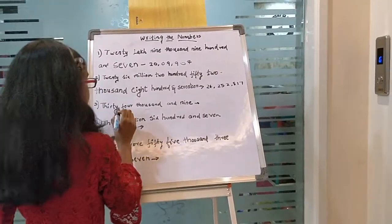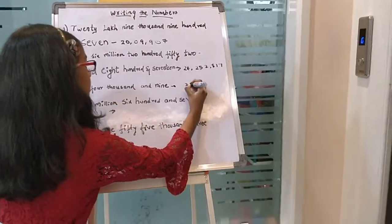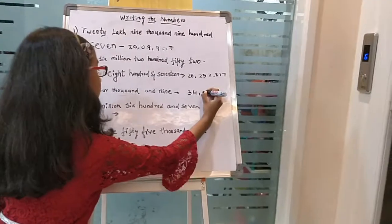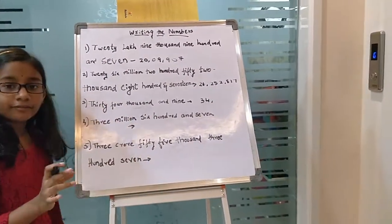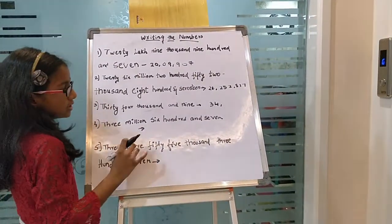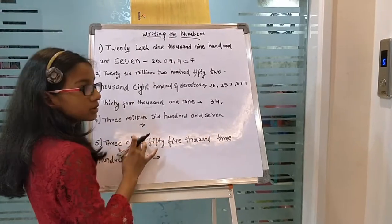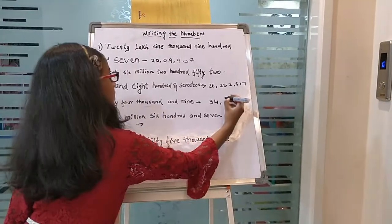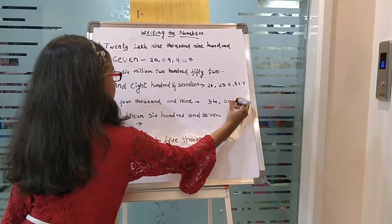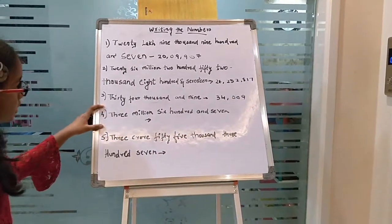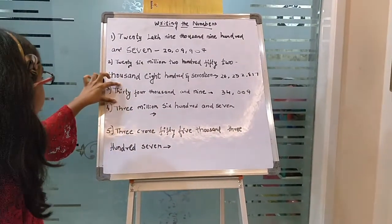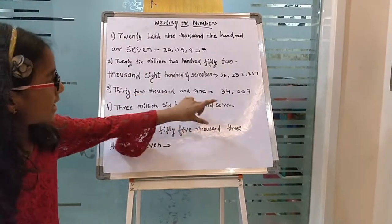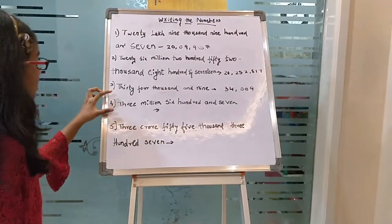Let's move on to this one now. 34 thousand and 9. There is nothing in the hundreds and tens period, so we just need to keep 0 and write 9. Find its number.